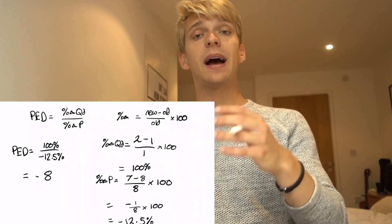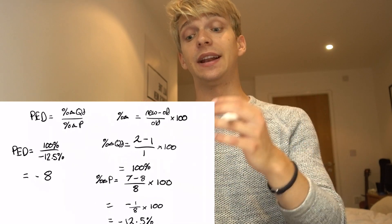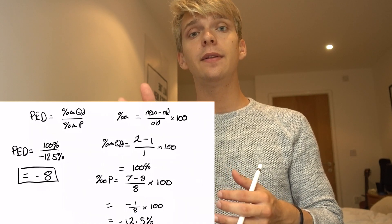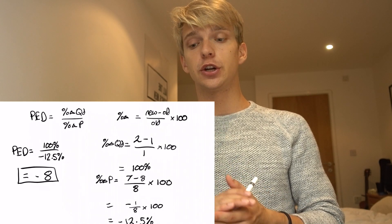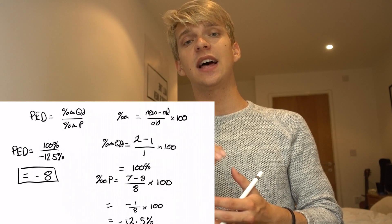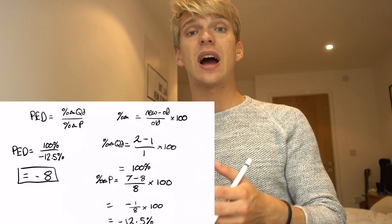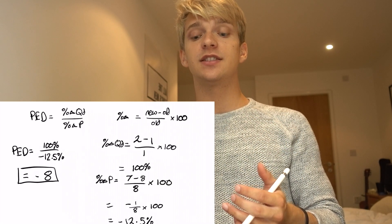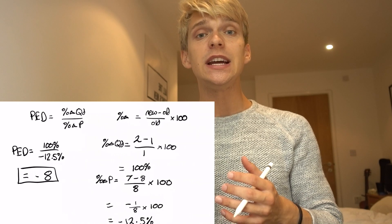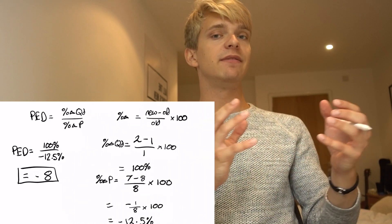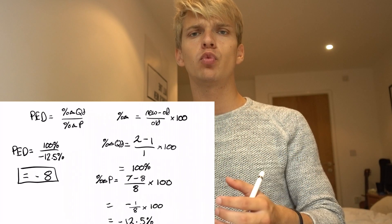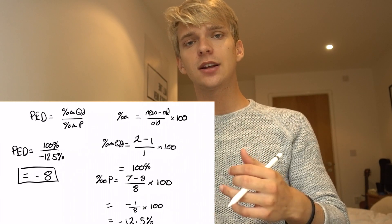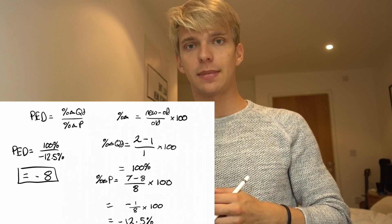Thinking back to our definitions of elastic and inelastic demand, we can deduce that in this region, when the price is moving from 8 to 7, this graph has elastic demand. Why? Because the absolute value of 8 is greater than 1. Any absolute value greater than 1 means that you have elastic demand, and less than 1 means that you have inelastic demand.